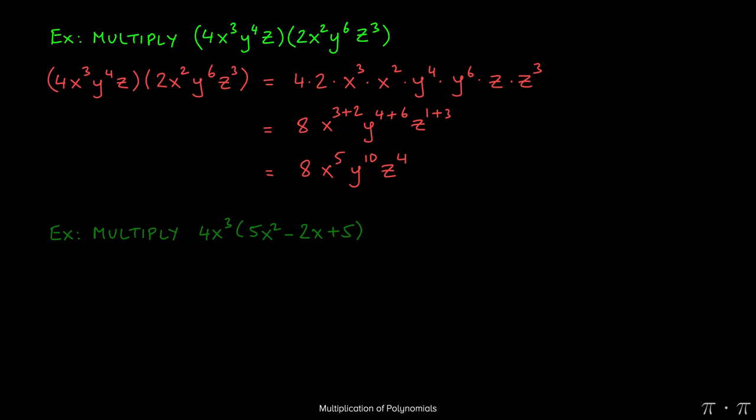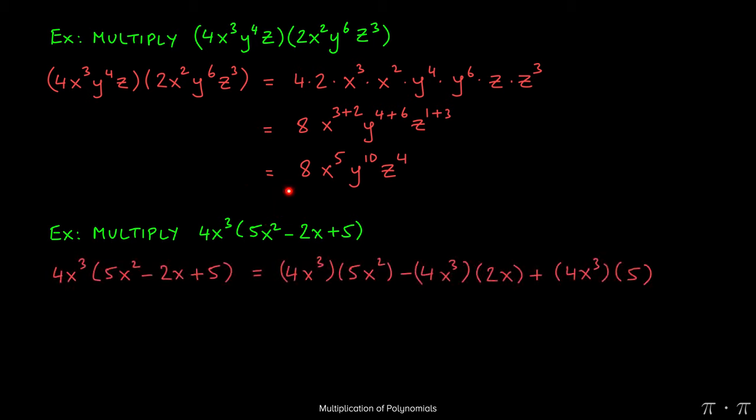Let's look at another question where we multiply a monomial by a trinomial. We use distribution to solve this problem. So we multiply the 4x³ by the 5x², by the negative 2x, and by the 5 as you can see written out here.